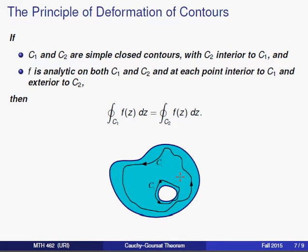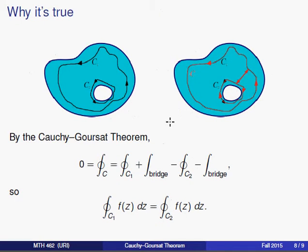All right, so now this is the principle. Let's talk about why this is true. Let's suppose that you had two curves, C1 and C2, as described in the theorem. And let's suppose that you were to imagine drawing a bridge joining one point on C1 to one point on C2.